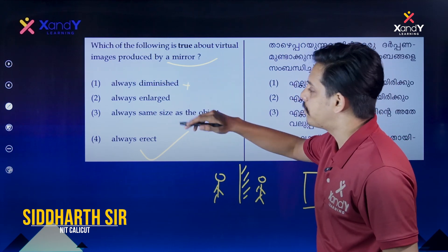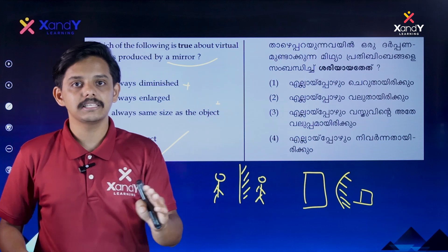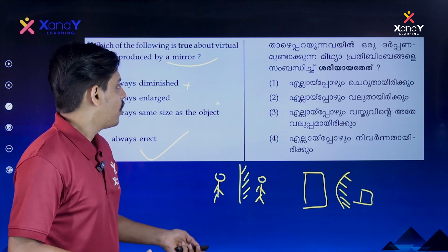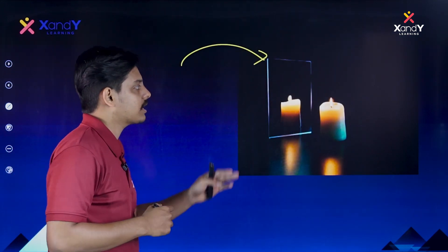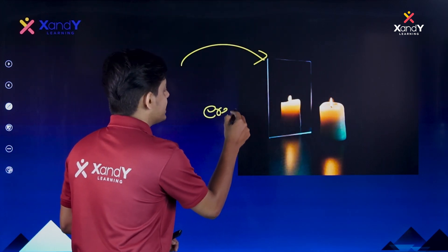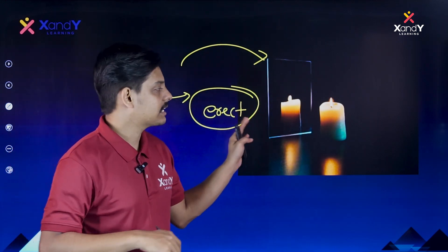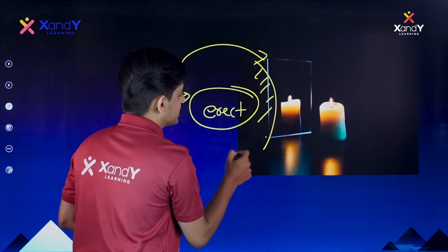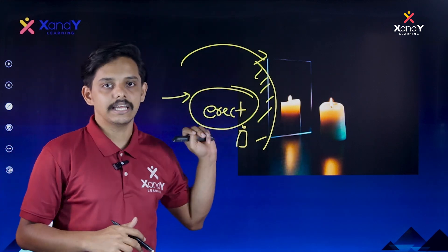So always diminished applies in some cases, same size in others, but virtual images are not always diminished or same size across all mirrors. In a plain mirror, you see the image at the same size, erect. In a convex mirror, the image is also erect. So the correct answer is always erect — option 4.